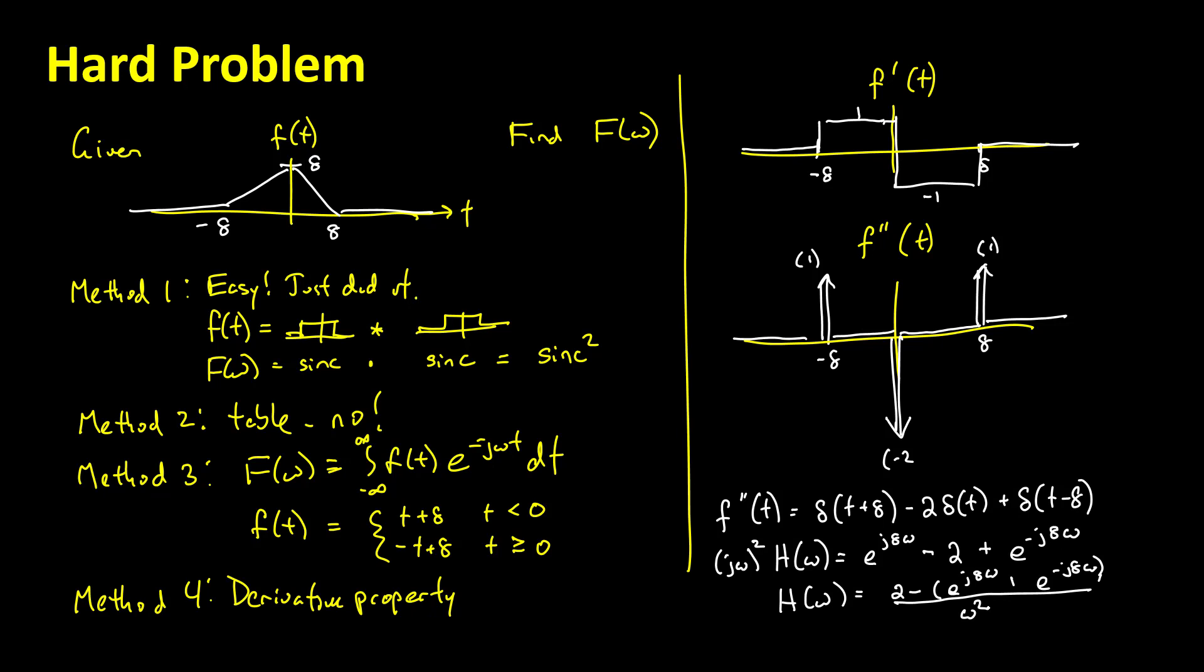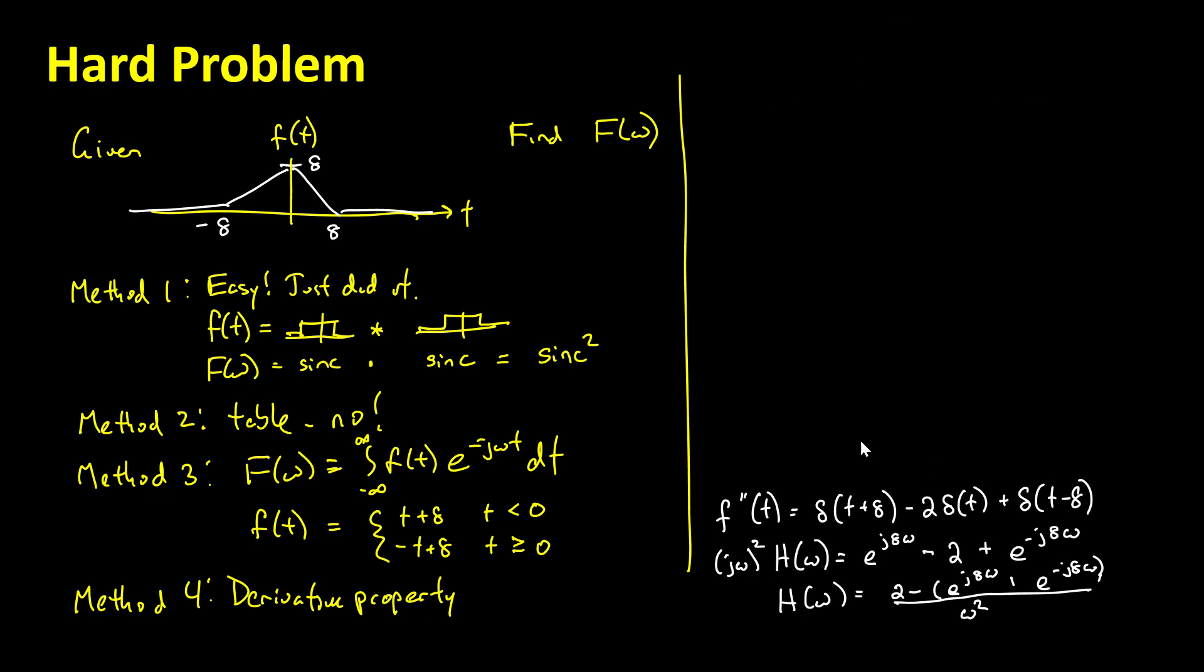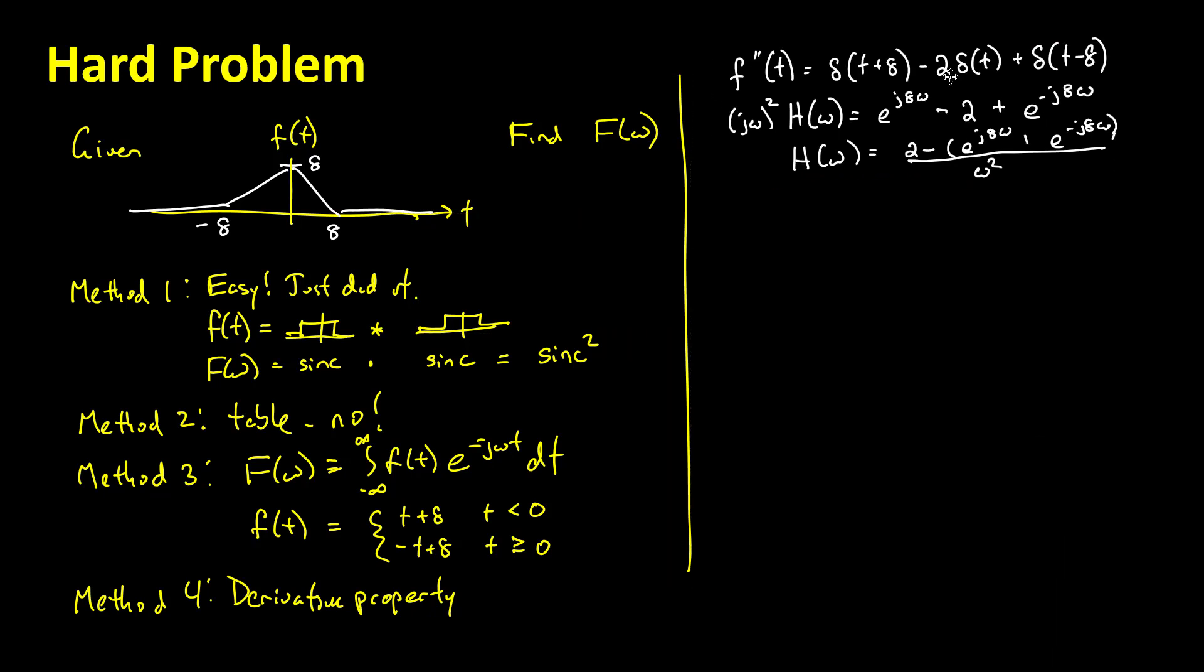This is starting to look an awful lot like an Euler identity, but I need more room for this. So I hope you're okay if I delete the graphics for a moment and bring the math up to the top. So recall Euler's identities. It's that a cosine of omega equals e to the j omega plus e to the minus j omega all over 2.